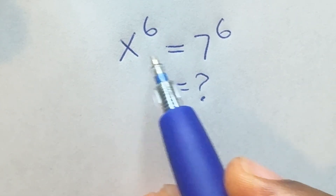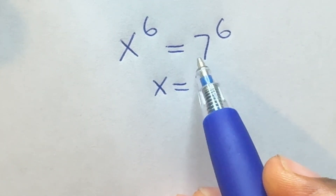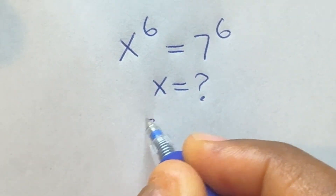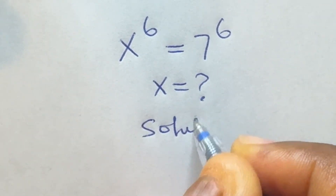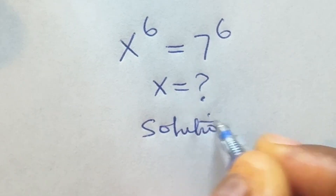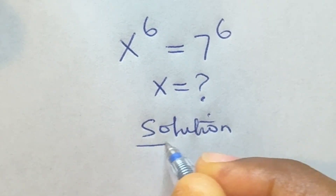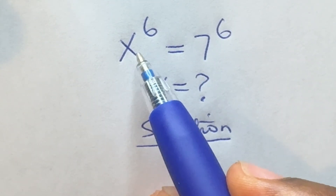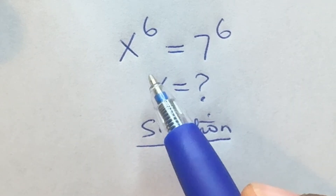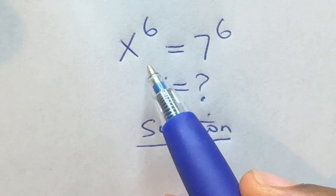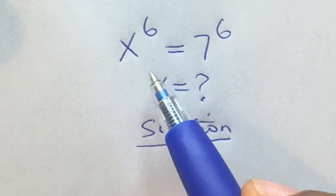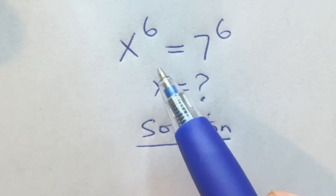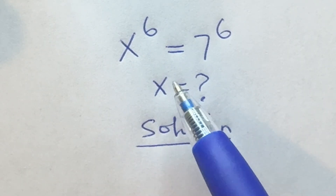x raised to power 6 is equal to 7 raised to power 6 — find all values of x. Usually the highest power of x determines the total number of solutions we are expecting. Since we have six, we're expected to get six solutions.